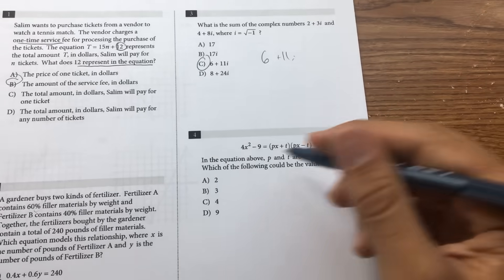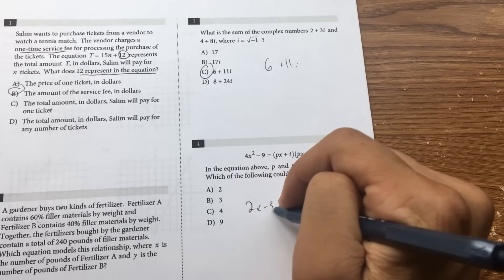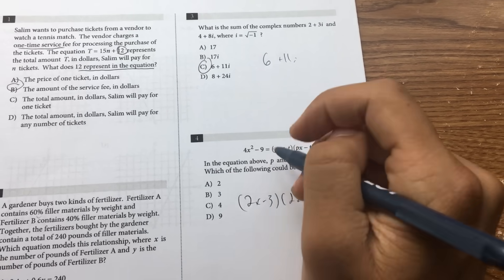Let's see, match the form 2x minus 3, 2x plus 3, so P is 2.